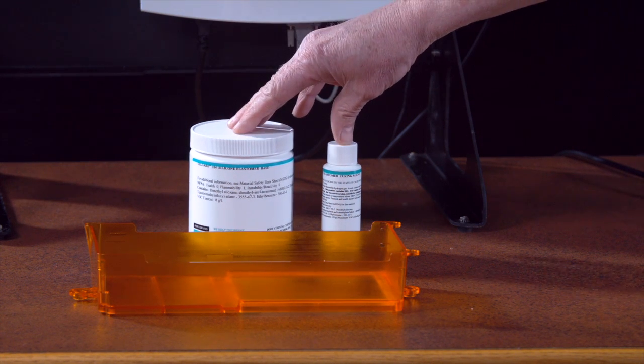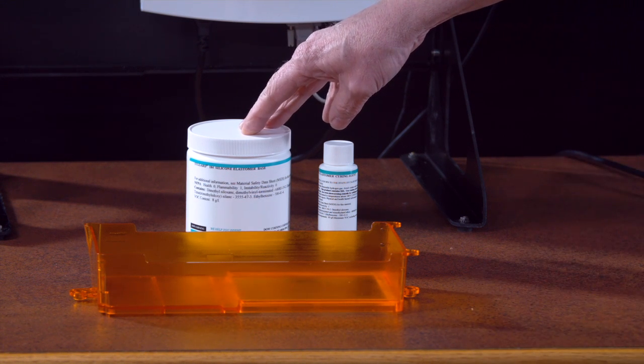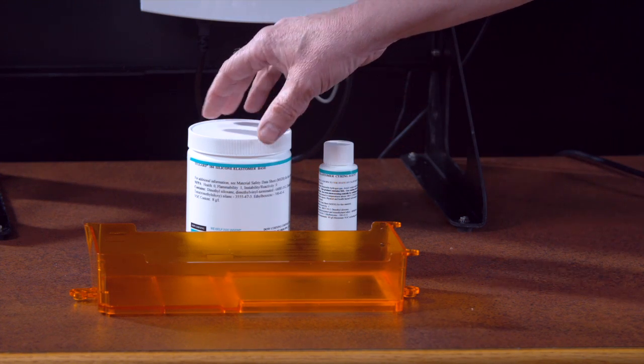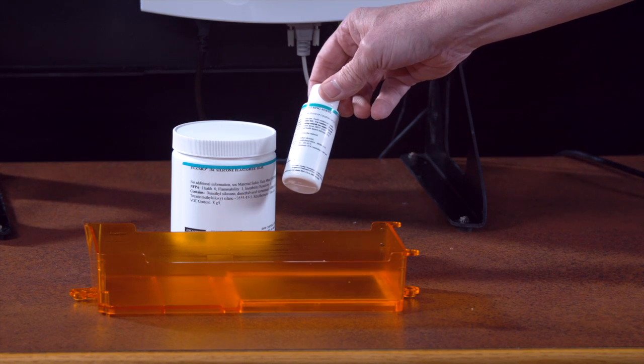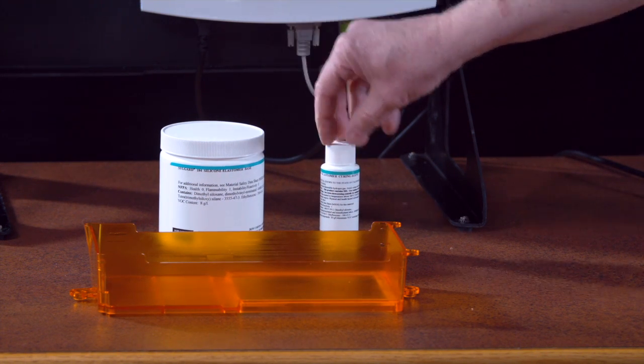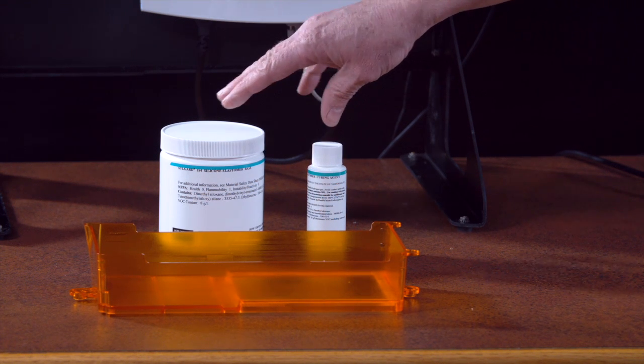What you're going to want to do is mix up roughly 65 milliliters. What I do is I'll take a little medicine cup. I'll pour in 60 of the main part and then 6 of the curing agent. So 60 plus 6 is a 10 to 1 mixing ratio for a total of 66 milliliters of material.